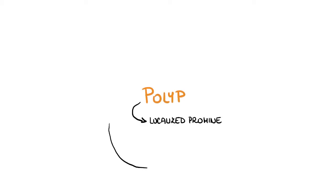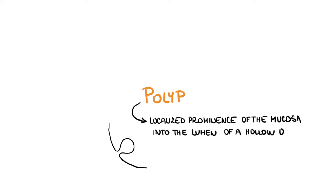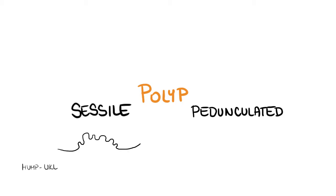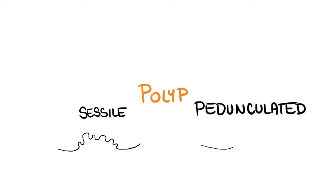A polyp is a descriptive term referring to a localized prominence of the mucosa into the lumen of a hollow organ. It may be sessile or pedunculated. The sessile type resembles a hump-like prominence with a wide base, while the pedunculated type has a thin neck with a wide, club-shaped head.